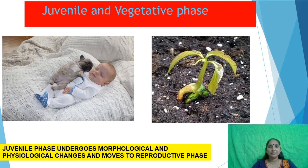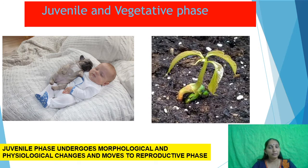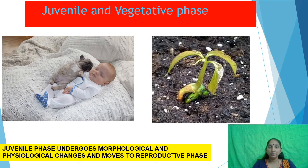What are the different phases in the life of an organism — animal or plant? Looking at the first picture, you can see a baby sleeping. The first phase of an organism is called the juvenile phase. In the case of plants, we call it the vegetative phase. In the juvenile phase, the organism is in a pre-reproductive phase — not ready for reproduction, only vegetative growth.